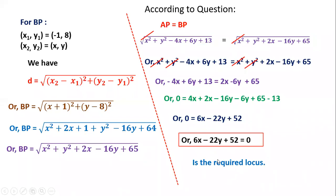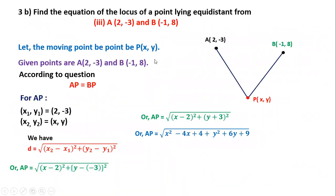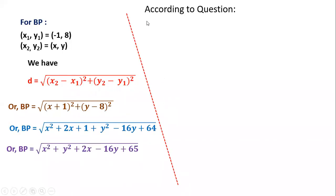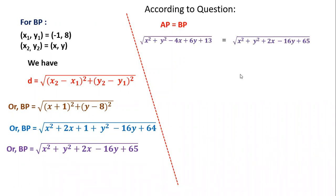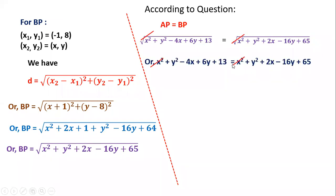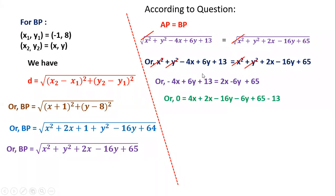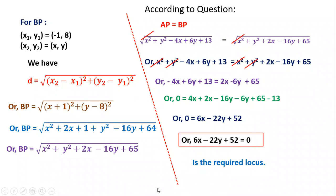So the required locus is 6x − 22y + 52 = 0. To summarize: we had two points in the question, we assumed point P(x,y), equidistant means AP = BP. We found AP and BP using the distance formula, set them equal, cancelled the roots and x², y² terms, and rearranged to get the required equation of the locus.